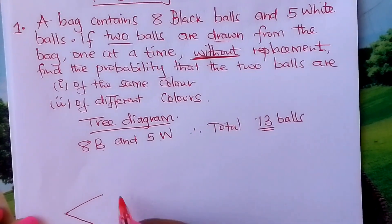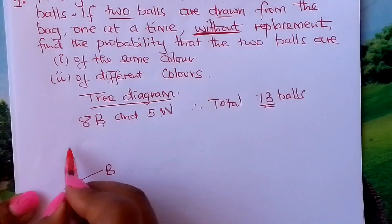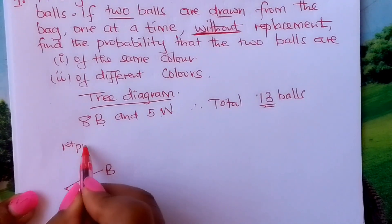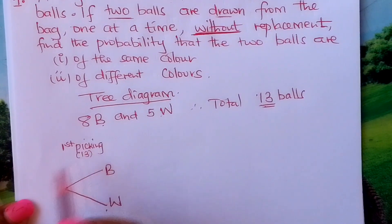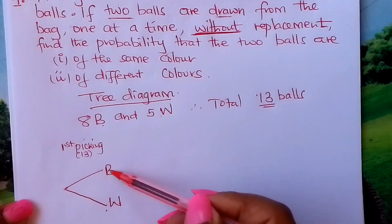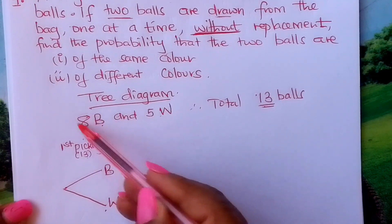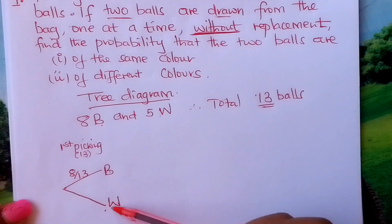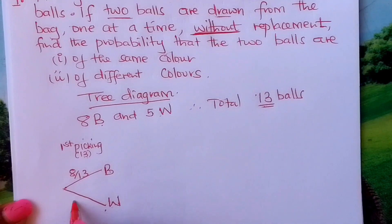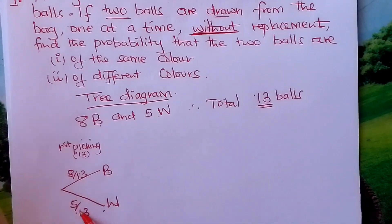You start with two branches — here you write B, and here you write White. This is the first picking of the ball. We have thirteen balls in total, so the probability of picking a black ball is eight out of thirteen. Similarly, the probability of picking a white is five out of thirteen. Note that if you add these two fractions, they always add up to one.